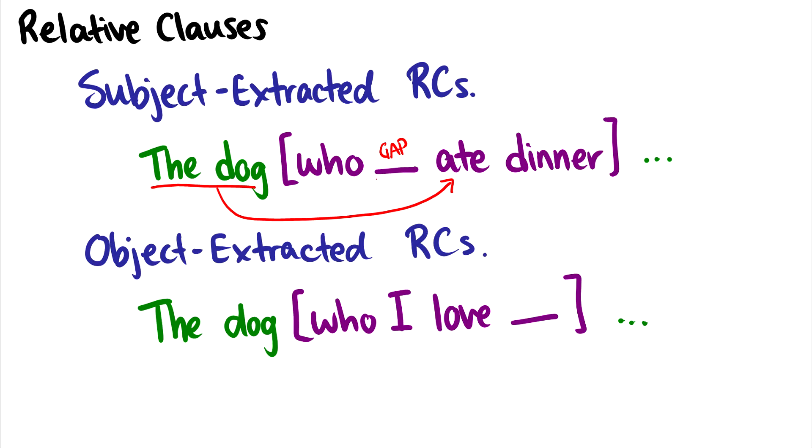Now an object-extracted RC works in the same fashion, the dog who I love, where we have the subject filled but then we leave an object gap here. So in this case the dog is the object of love and this moves out of the embedded clause, and then we include a wh word at the beginning of the embedded clause.